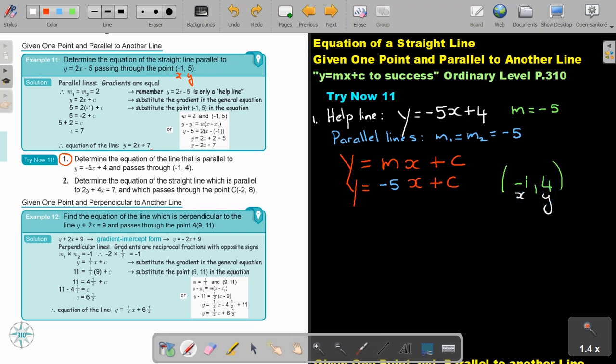In the place of y, I'm going to substitute 4. And in the place of x, I'm going to substitute negative 1. And now I'm just going to go into one color. 4 is equal, and negative times negative is positive 5 plus c.